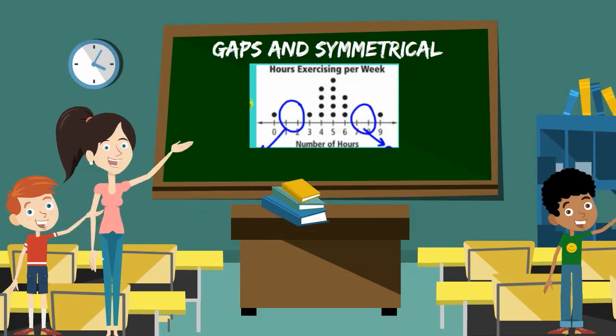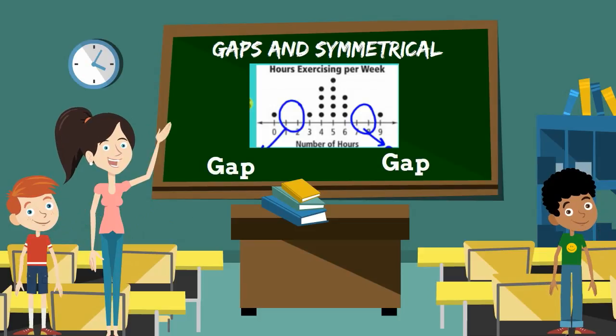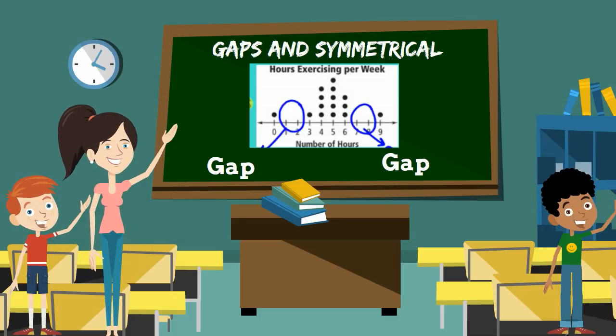In this next graph, notice that we have gaps. There is nothing at 1 and 2 and 7 and 8, but it also has a symmetrical shape and notice that it is symmetrical, kind of like a mountain shape.